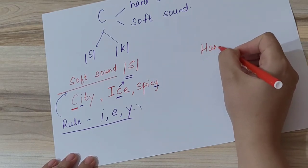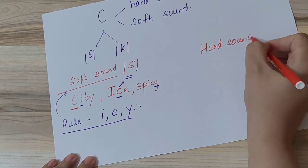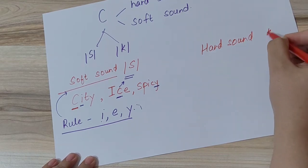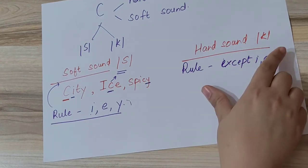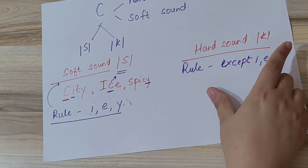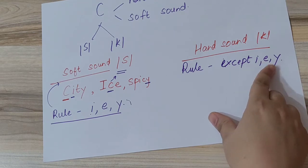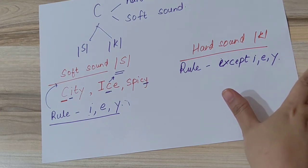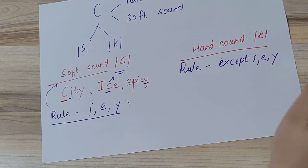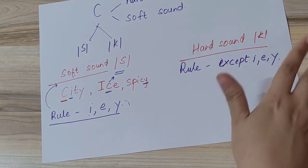The hard sound of letter C is 'ka'. We will pronounce the hard sound in words other than I, E, Y. Whatever words are there, before which C comes, in those we will pronounce 'ka', the hard sound of C.